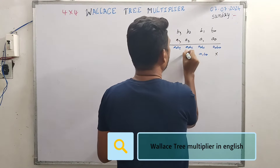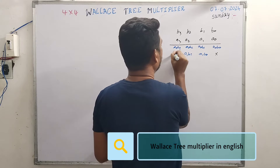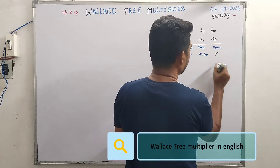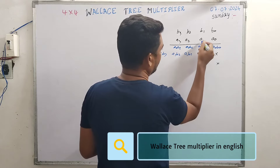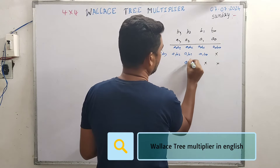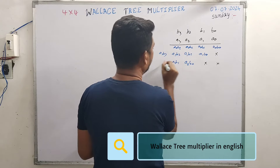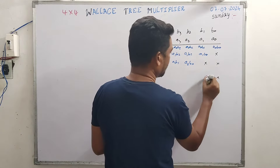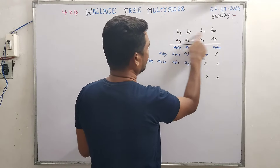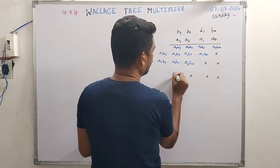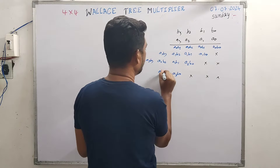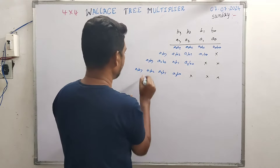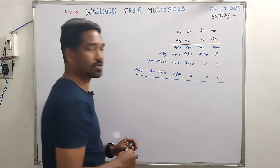For a1: a1·b0, a1·b1, a1·b2, a1·b3 with 2 offsets. We are done with a1. For a2: a2·b0, a2·b1, a2·b2, a2·b3 with 3 offsets. And we are multiplying the entire multiplicand with a3: a3·b0, a3·b1, a3·b2, a3·b3. This completes the normal multiplication stage.